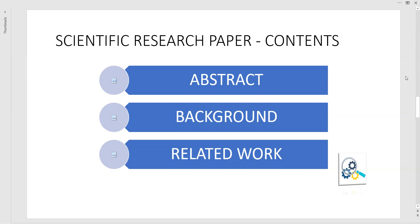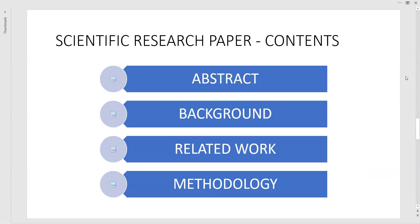Later we go through the related work. Related work does not mean a literature survey — it means identifying the research gaps. We put down the objectives based on those identified gaps, and we write those gaps in the form of objectives that we are going to fulfill during our research work. During the research article we will go through the experimental investigations and report those points.